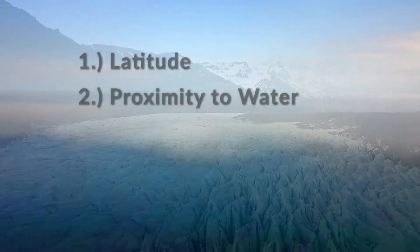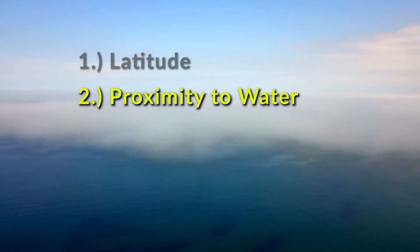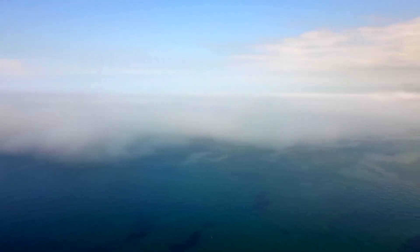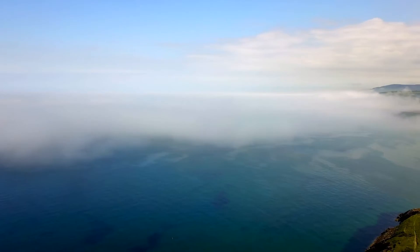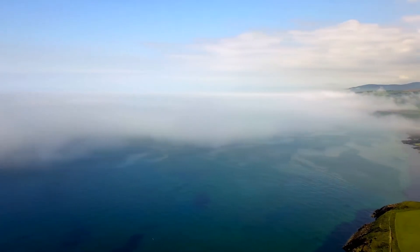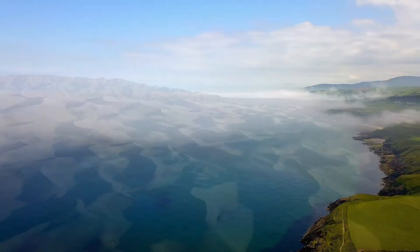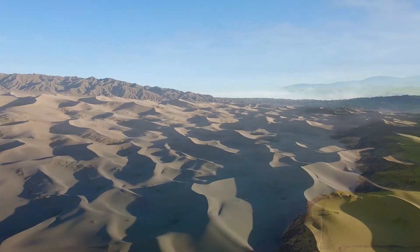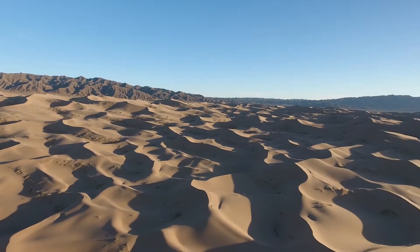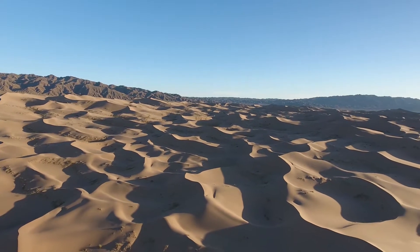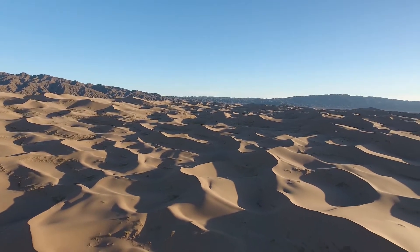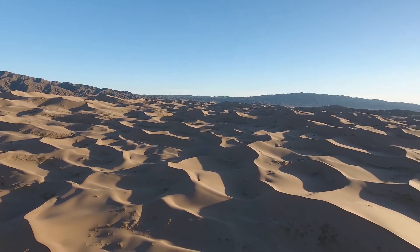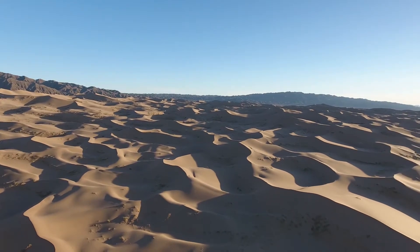Number two: proximity to water. Do we live by the ocean, where fluctuations in temperatures are very small? Or in the center of a large landmass, where we can see huge fluctuations in temperature throughout the year?